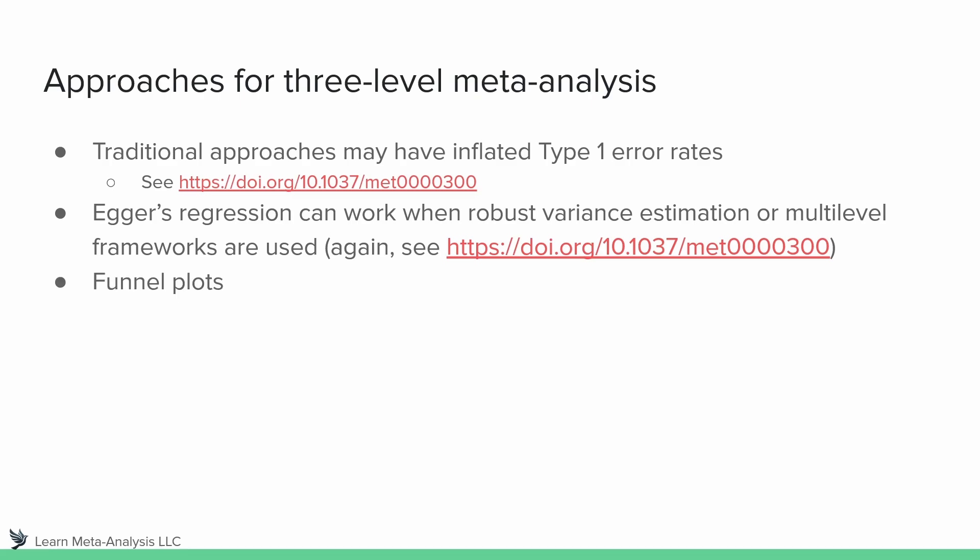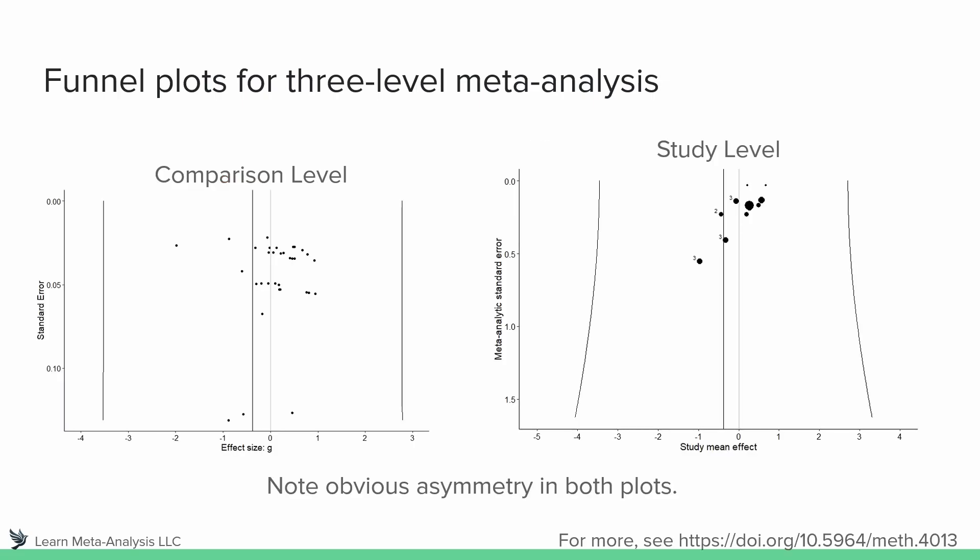Another approach we can use is funnel plots, since we can still create them for three-level models. Using an approach defined in the paper listed in the bottom right corner, you can see very obvious asymmetry in both plots — and I included this example specifically because it is asymmetrical compared to the relatively symmetrical one we saw earlier. The plot on the left is by comparison, whereas the one on the right groups by study. In a three-level model, we can have more than one comparison per study, which is why on the right-hand side you can see tick boxes with either two or three next to each dot, indicating how many comparisons were within that study. In both plots, it's quite asymmetrical — there are many more studies to the right side of the mean than to the left.